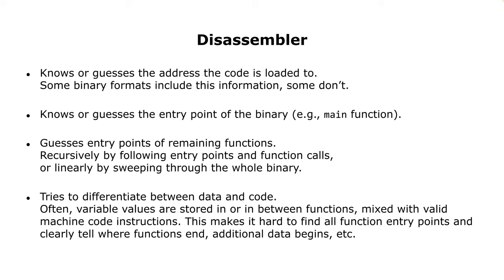The first step is usually a disassembler. The disassembler knows or guesses the address the code is loaded to - which raw binaries or firmware just don't have. It also knows or guesses the entry point of the binary, like the main function, and it might also guess the entry points of the remaining functions. You could follow from the entry point, from the main function, which then calls puts or whatever.